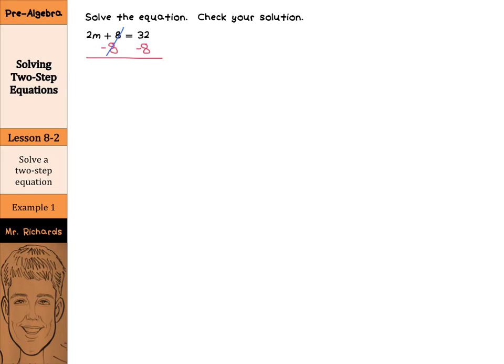As this cancels, we're left with 2m equals 32 minus 8 is 24. Then, divide by 2 on both sides. This 2 then cancels, and we're left with m equals 12.